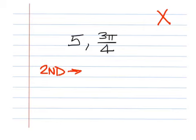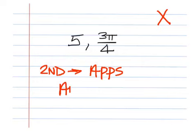Hit the Apps button, which is below X, T, theta, N. When you do that, you'll come back with the angle menu.